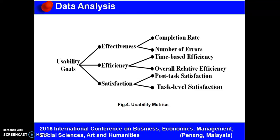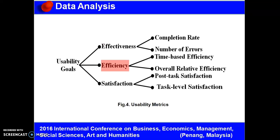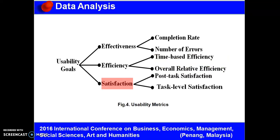The level of usability of the web-based test blueprint system can be best measured using observable and quantifiable metrics, as illustrated in Figure 4. Usability metrics are used as the statistics of the usability goals. For instance, effectiveness can be measured using usability metrics such as completion rate and number of errors, whereas efficiency can be measured using either time-based efficiency or overall relative efficiency. Satisfaction can be measured using post-task satisfaction or task-level satisfaction.